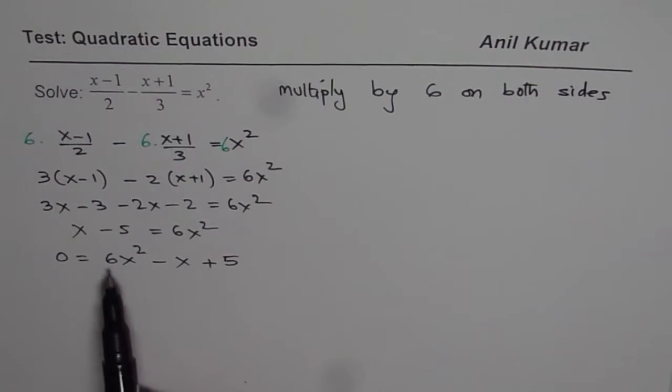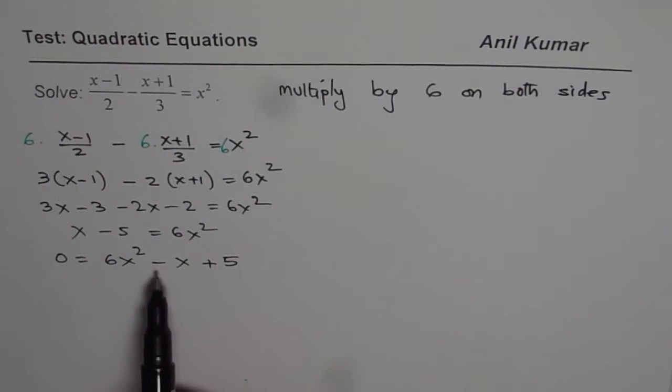Now 6 times 5 is 30 and we need something which is minus 1, but the product is positive. So we cannot really factor it.